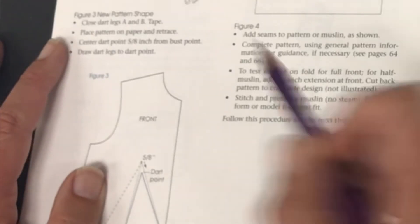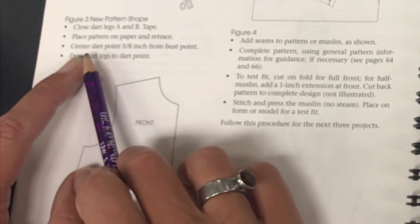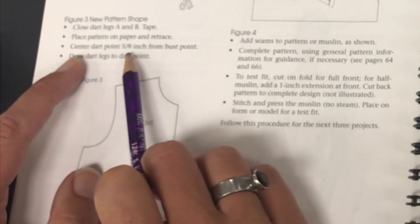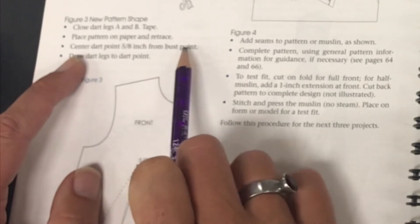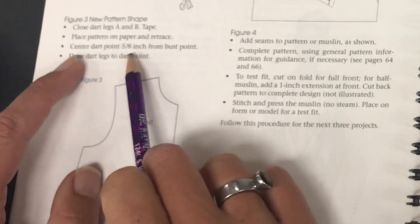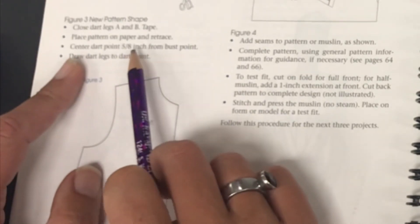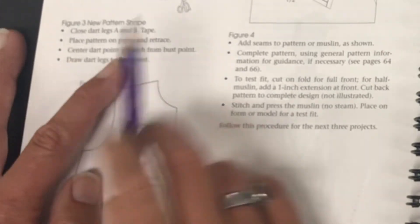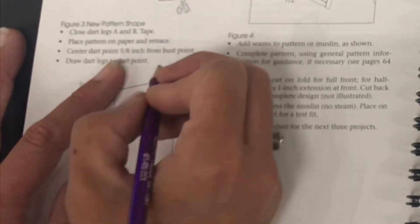So now it would like us to center our dart point 5/8 inch away from the bust point. But we are working on the half scale. So what is half of 5/8ths?